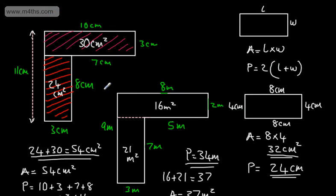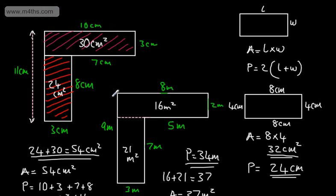So that is finding the area and perimeter of composite shapes when we have rectangles. We might involve triangles with this, and we will look at that in another video.